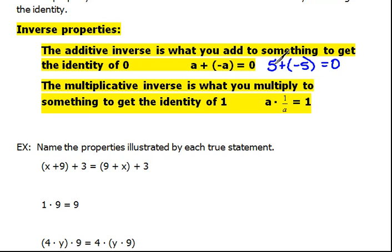if our number was 5. What would we have to add to 5 to get 0? Well, that would be a negative 5, the opposite.